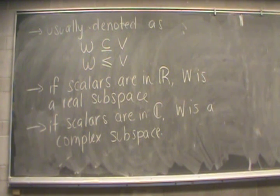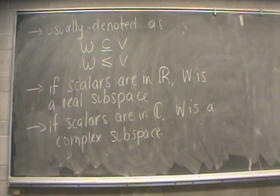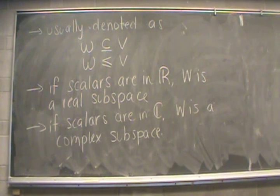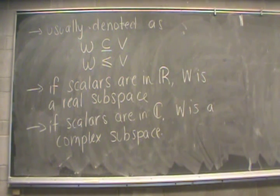A couple of extra notes regarding the previous definition: when denoting subspaces, you may use one of two notations to show that W is a subspace of V. If the scalar multiplication is defined for real numbers, W is called a real subspace. If the scalar numbers are complex, then W is called a complex subspace.